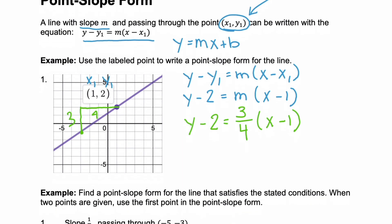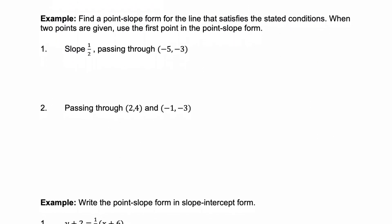Let's look at another example: find a point-slope form for the line that satisfies the stated conditions. When two points are given, use the first point in the point-slope form. This is crucial because point-slope form isn't unique, so if you use a different point than you're asked for, my math lab would grade that wrong, even though it would technically simplify to the same slope-intercept form. Always make sure you're following the directions.